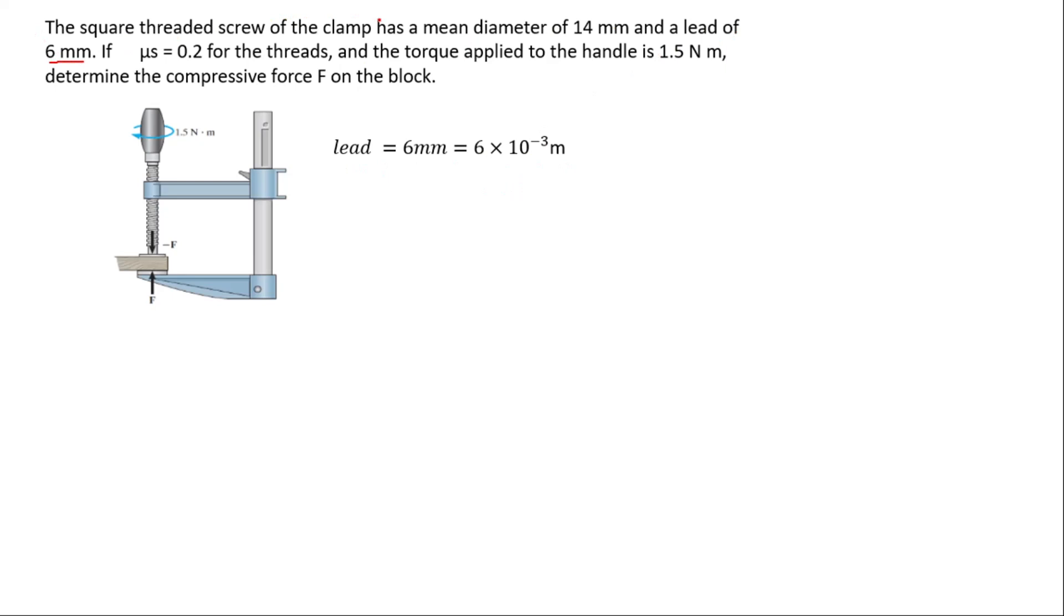Now we have the thread diameter which is 14. So the thread diameter is 14 millimeters and we try converting it to meters. The thread radius is the diameter divided by 2 to get 7 millimeters, also converted to meters.